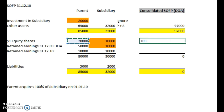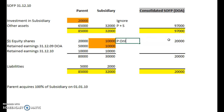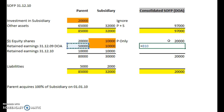Equity shares — this is just the parent only. Now, what retained earnings do we put in the consolidated balance sheet? We put in the retained earnings of the parent, and we put in the subsidiary's retained earnings. But we need to include only the earnings earned this year from both the parent and subsidiary — not this 10,000 here.